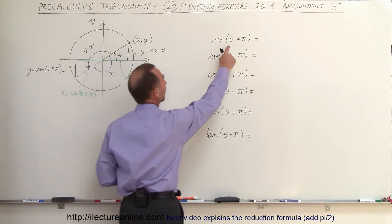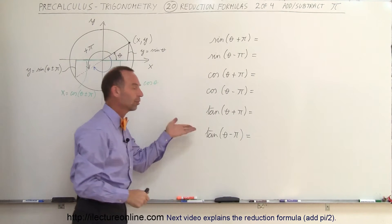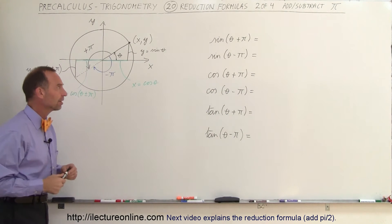So the question is, what does the sine of theta plus pi look like, or what does the sine of theta minus pi look like? Same for the cosine, same for the tangent. How do we figure that out?